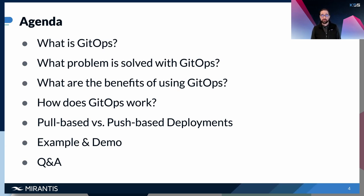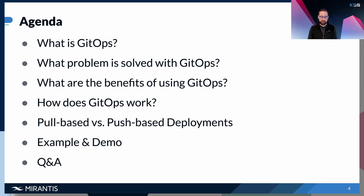For today's agenda, we will look into what GitOps is, what problems it solves, what benefits it provides, and what use cases it can handle. We'll also cover how GitOps pipelines work, the two different approaches of pull-based and push-based deployments, and an example with K0s and Flux. We'll look into a demo, and at the end we'll have a Q&A session.